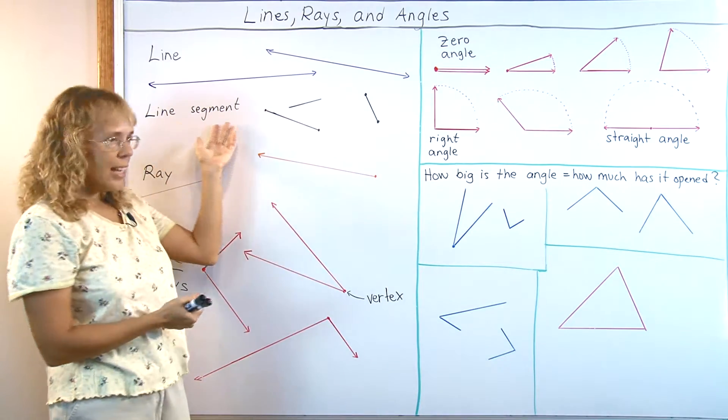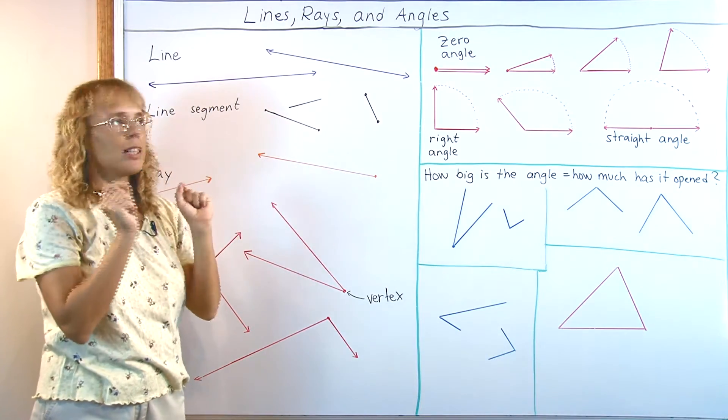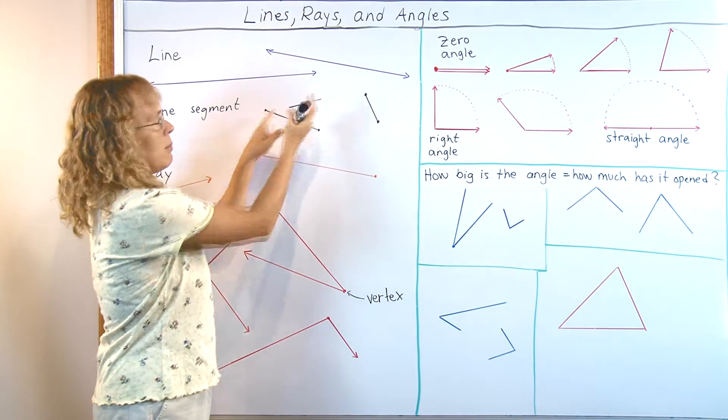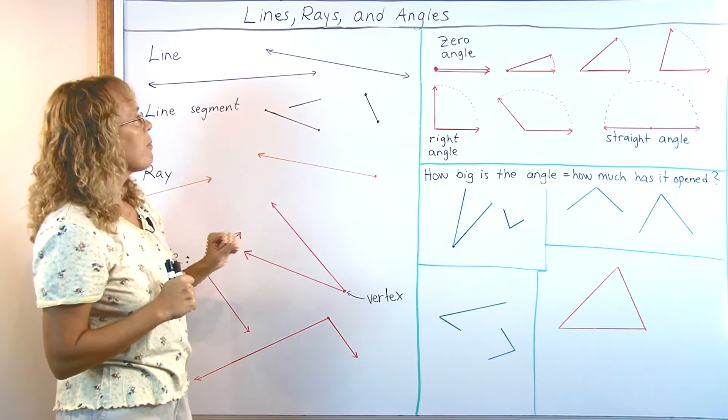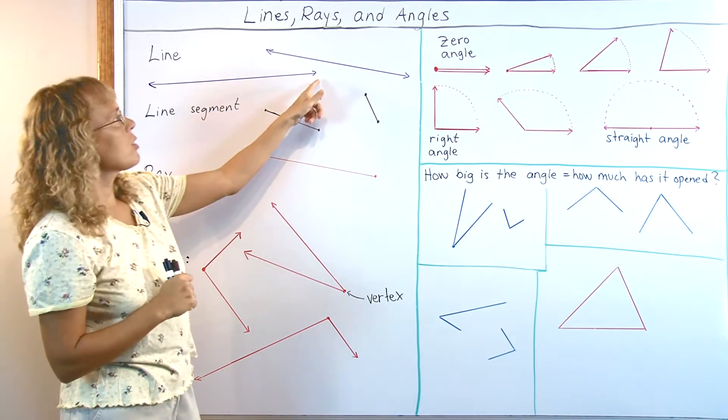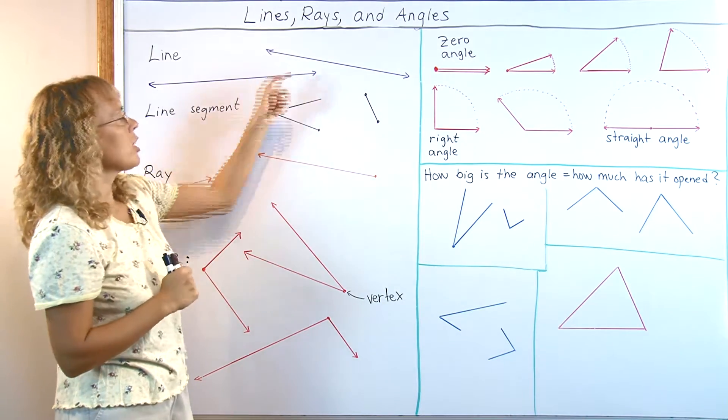And the line segment has an end point and starting point. You can mark them like this or not mark them, either way. But line segment starts and ends, whereas line does not and we can show it with these arrows at each end.